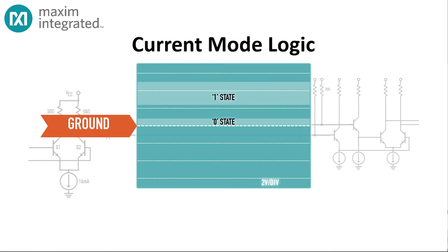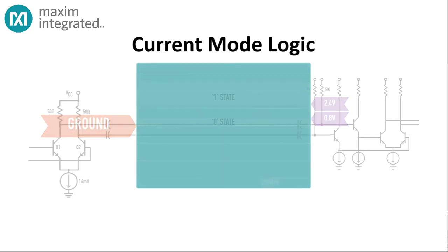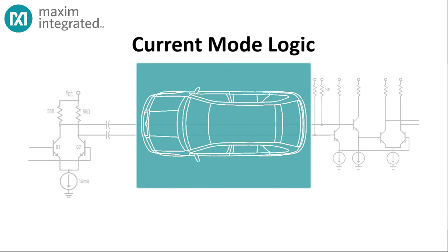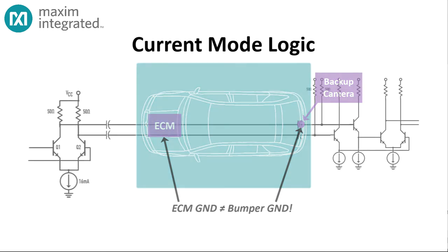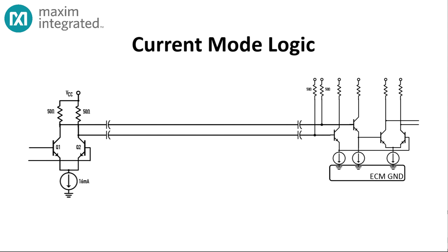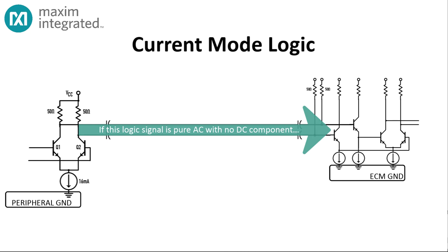A one state might be defined as, let's say, any voltage above 2.4 volts. And a zero state might be defined as any voltage below 0.8 volts referenced to ground. But, in an automotive environment, what's ground at the ECM may not be ground at the rear bumper. Worse, the ground at the rear bumper may be extremely noisy compared to what the vehicle considers to be ground. It's better if you can let the ECM and the peripheral reference to their own grounds. If the logic signal we launch onto the cable is AC with no DC component, we can capacitively couple both the transmitter and the receiver, and then the receiver can bias the incoming signal as necessary to put the signal transitions right in the voltage sweet spot.